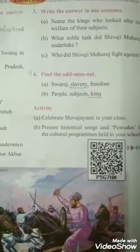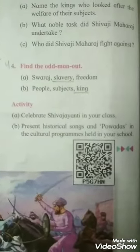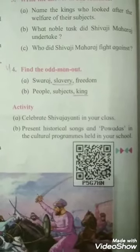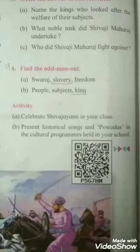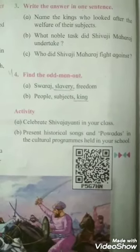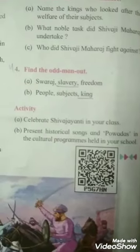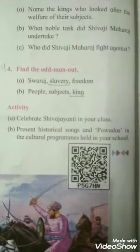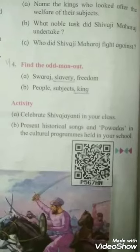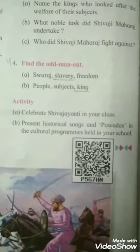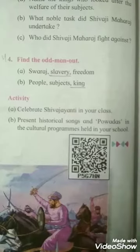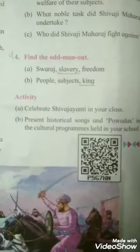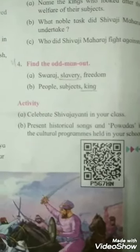Question No. 4: Find the Odd Man Out. First set: Swaraj, Slavery, Freedom. Swaraj means self-government, Freedom means liberty — both are positive. Slavery means bondage, so the odd word is Slavery. Second set: People, Subjects, King. People means common folk, Subjects means the king's subjects — so the odd word is King.